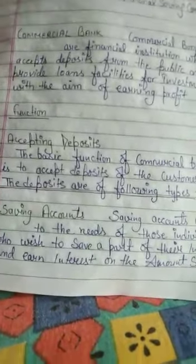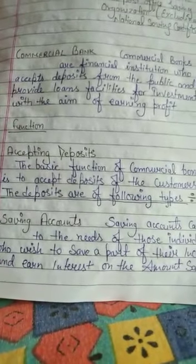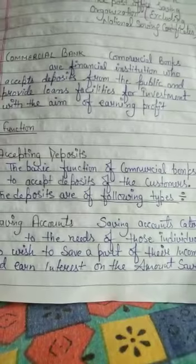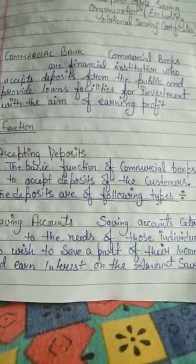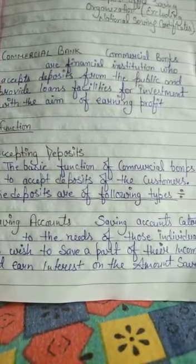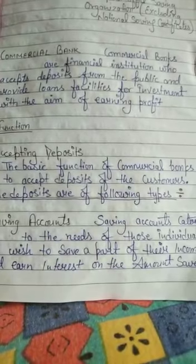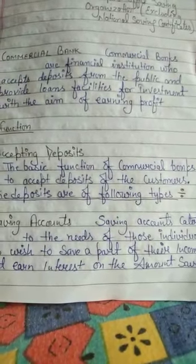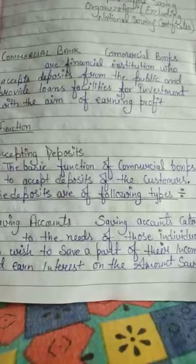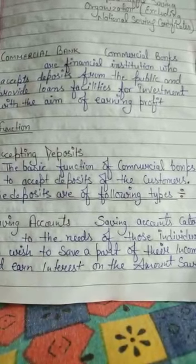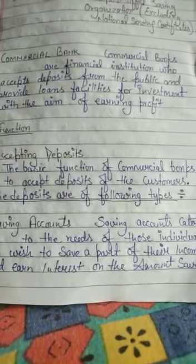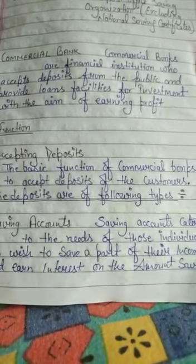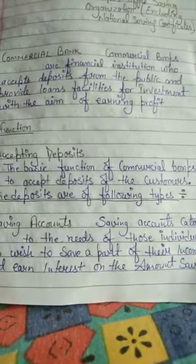Ab functions of commercial banking. Pahla function hai accepting deposits — yeh basic function hai commercial bank ka. Customers se paise accept karna. Log paise ka kuch hissa bachake bank mein daltein hain. Kuch saving account kholte hain, kuch FD karte hain jiska alag account hota hai.